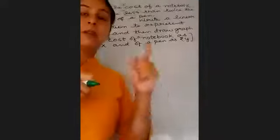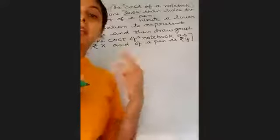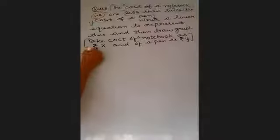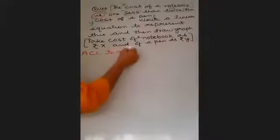One less. Less means minus. That means less means minus, more means plus. One less. Then comes minus. Twice—twice is to multiply. Then what is the cost of a pen? Y. So 2y minus 1. So what is the equation as per the question? X is equal to 2y minus 1.